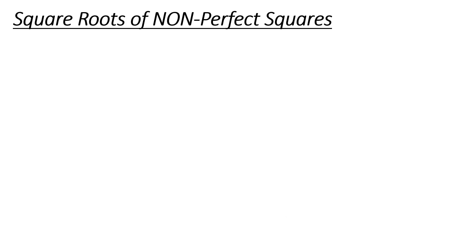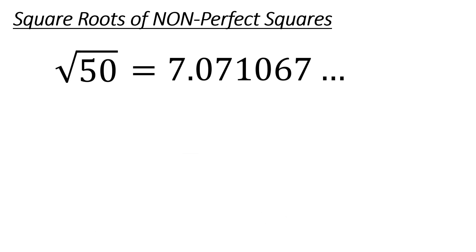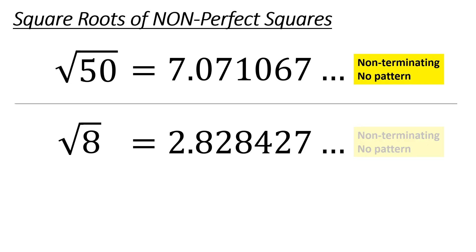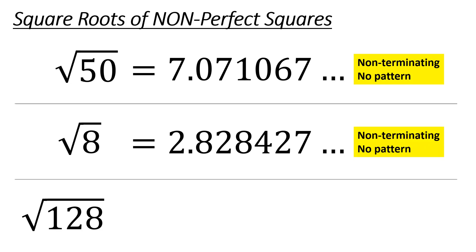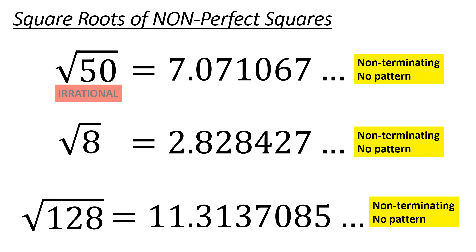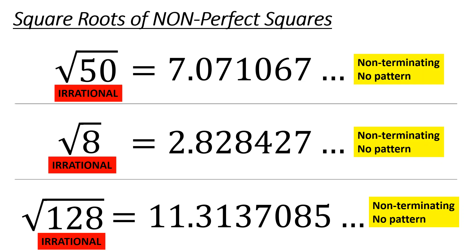Now we're going to get into non-perfect squares. Square root of 50 — when you work it out using a calculator, it goes on and on forever: non-terminating, no pattern. Square root of 8 — same thing, it's gonna be 2-point-something going on forever. Square root of 128, if you type it in, works out to a really long number — non-terminating, no pattern. These are all irrational numbers. Irrational numbers go on and on forever with no pattern.